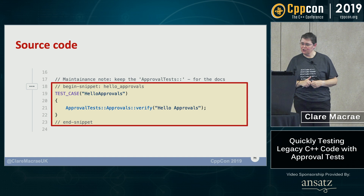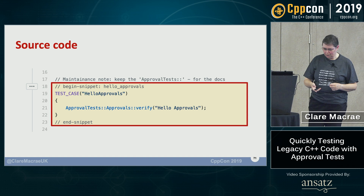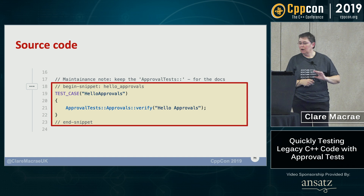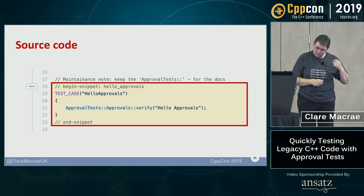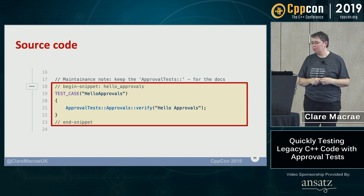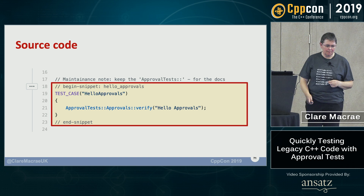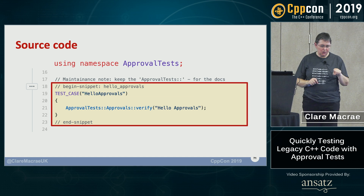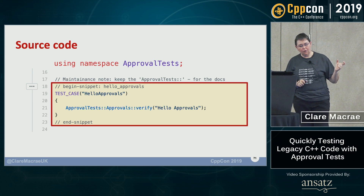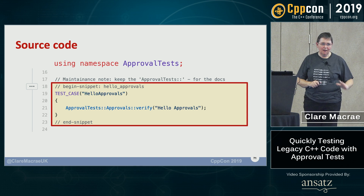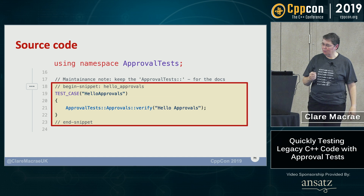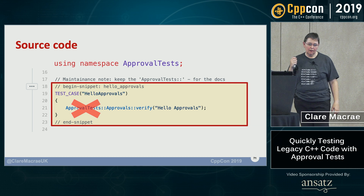We recently put all our code inside an `approvalTests` namespace. If you don't need that namespace, I really recommend adding `using namespace ApprovalTests` to your tests and not stating the namespace. All later examples will do that.